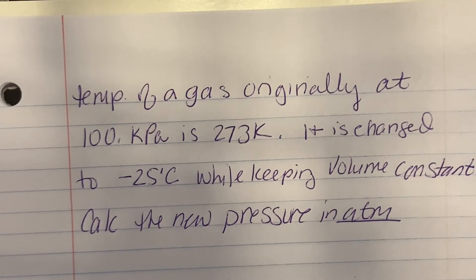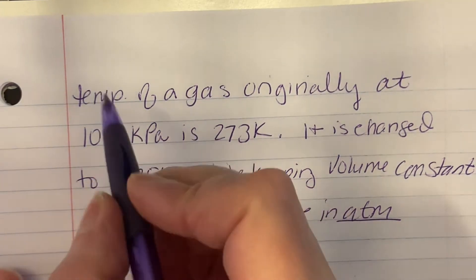The temperature of a gas originally at 100 kPa is 273 Kelvin. It is changed to negative 25 degrees Celsius while keeping the volume constant. Calculate the new pressure in atmospheres.